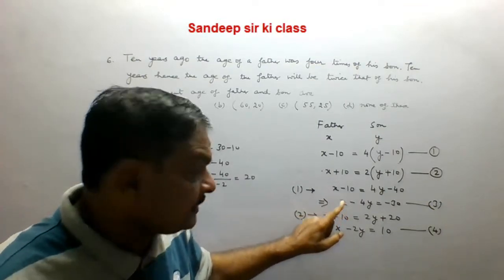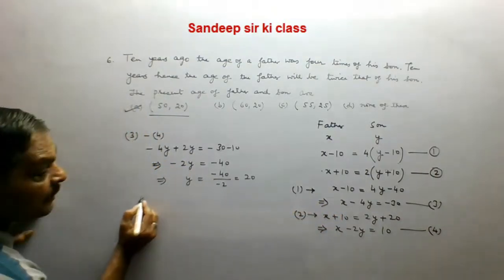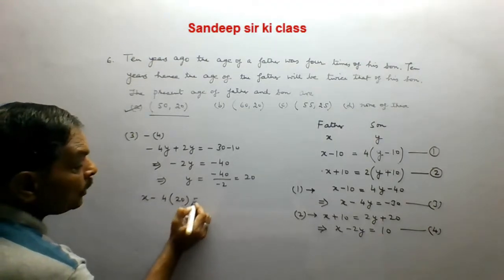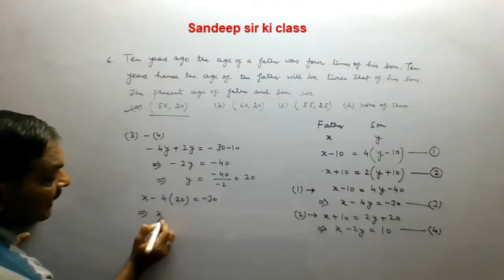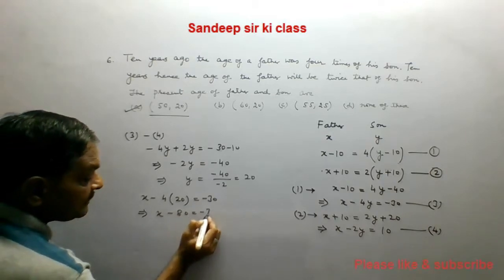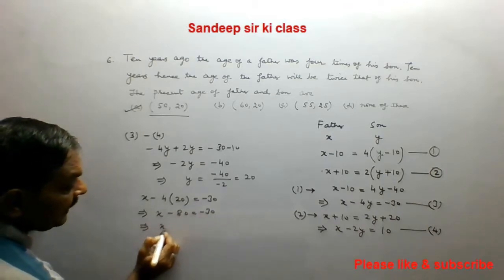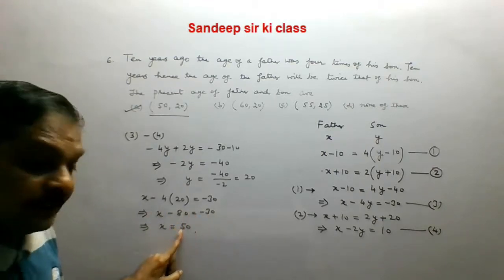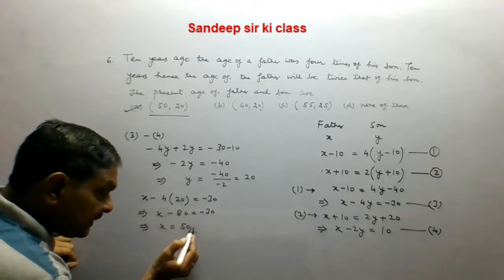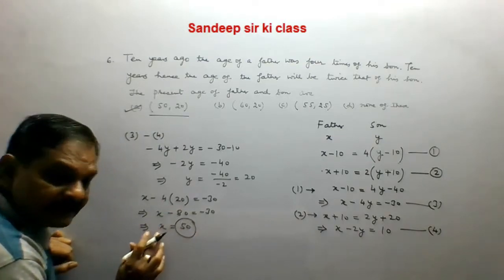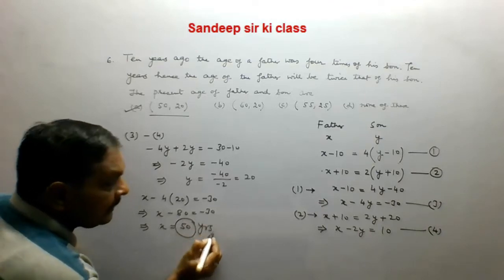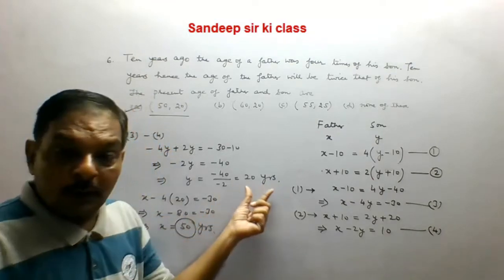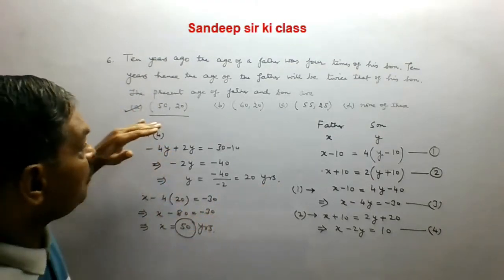Now substituting Y equals 20 into the equation: X minus 4 times 20 equals minus 30. This gives X minus 80 equals minus 30, so X equals 50. Therefore the age of the father is 50 years and the age of the son is 20 years, which is option A.